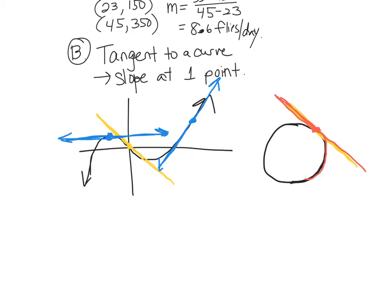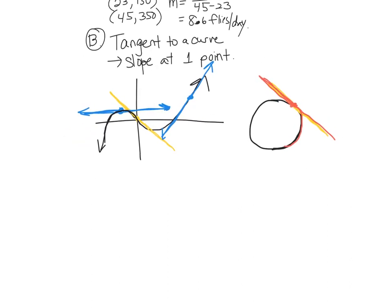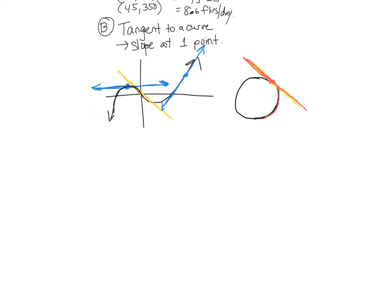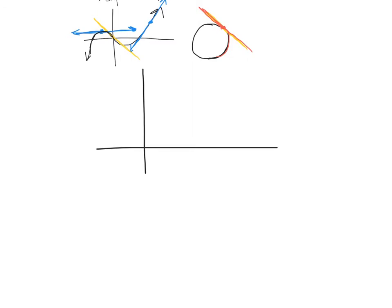Physics students might recognize this: at the maximum of a curve, what is the slope? It's zero — velocity is zero at the maximum. To figure out how to find the slope at exactly one point, we need a formula. Let's derive it together. Draw an xy-plane and sketch a curve on it.